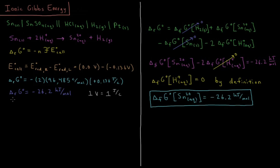We can also compute the standard Gibbs energy of reaction from the standard Gibbs energies of formation of all species. Here, ΔG°rxn equals ΔG°f(H₂ gas) + ΔG°f(Sn²⁺ aq) − ΔG°f(Sn solid) − 2×ΔG°f(H⁺ aq). Since H₂ gas and solid tin are standard states, both formation energies are defined as zero, leaving only ΔG°f(Sn²⁺ aq) minus 2 times ΔG°f(H⁺ aq).